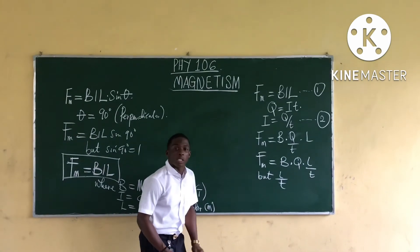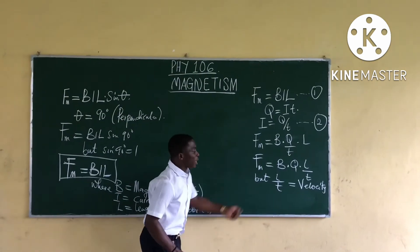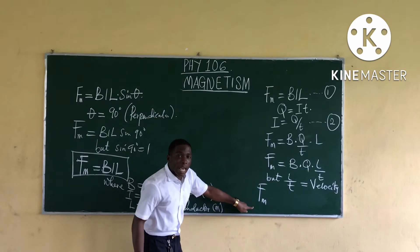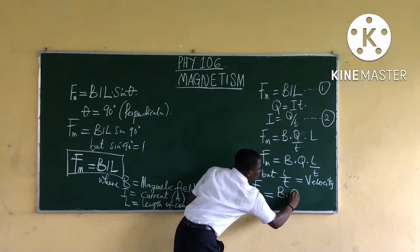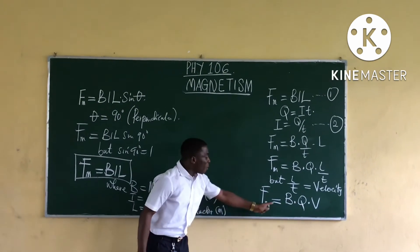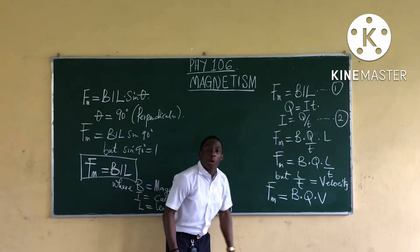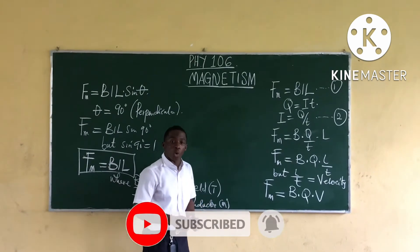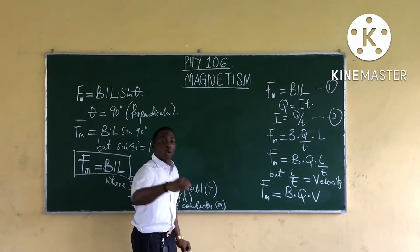Since displacement over time is velocity, L/T equals velocity. Therefore, the magnetic force on an electron is F = BQV, where B is the magnetic field, Q is the charge of the electron (a constant value of −1.6 × 10⁻¹⁹ coulombs), and V is the velocity of the electron.